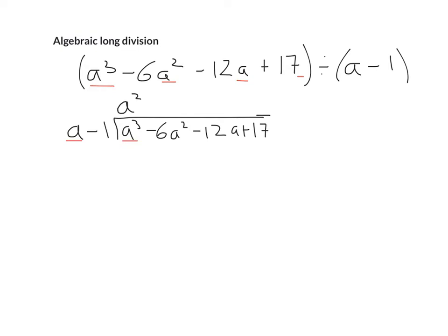Step two is you take your answer and you multiply it by both of these terms. So a² by a gives you a³, and if you've done it properly you should always get the same number or terms above and below. And a² multiplied by -1 gives you -a². The next step is you change the signs on both of the terms that you've just written down. So that's going to change to a minus, and that's going to change to a plus.